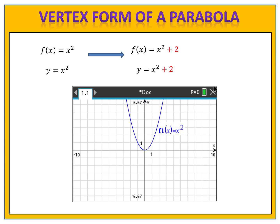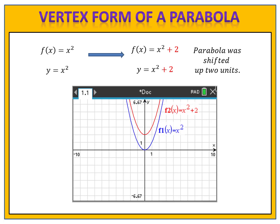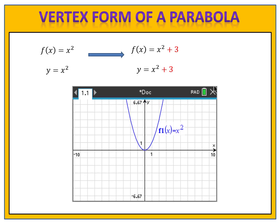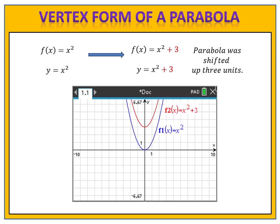Let's go back to our basic graph. What do you suppose would happen if we change that equation from f of x equals x squared to f of x equals x squared plus 2? If you guessed that the parabola would move up two spaces, you're absolutely correct. Adding 2 to x squared moved the graph two spaces up. Again, we go back to our basic function and transform it to f of x equals x squared plus 3. The graph will shift up three units. So when we add 3 to f of x equals x squared, the graph moves up 3.